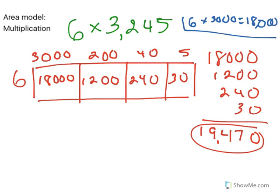Great job. You just found out that 6 times 3,245 is 19,470. And maybe you even figured out that answer was reasonable because you estimated 6 times 3,000 equals 18,000. Today we just reviewed how to use the area model strategy to help solve one-digit times four-digit multiplication problems.